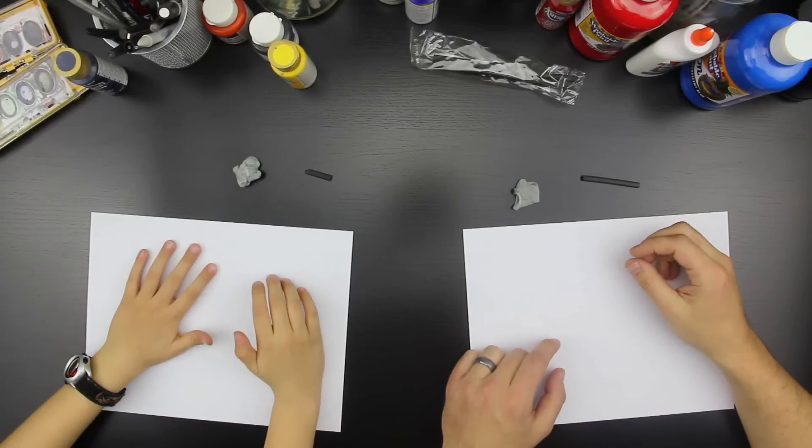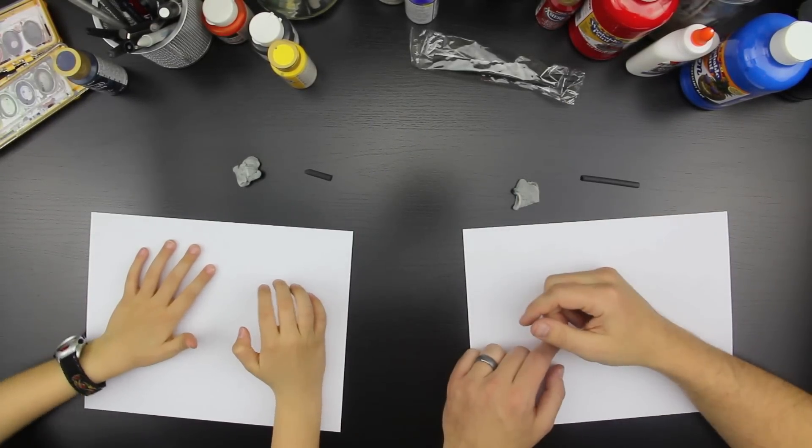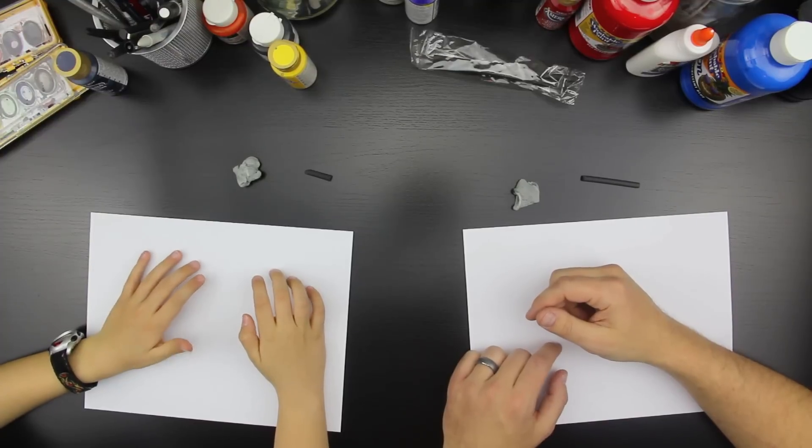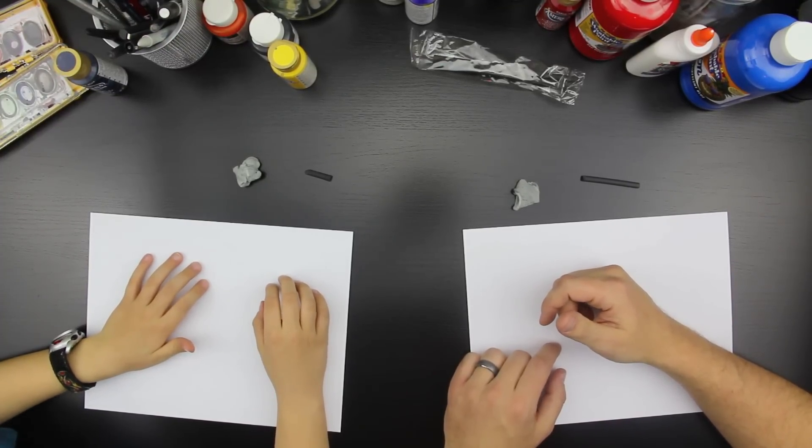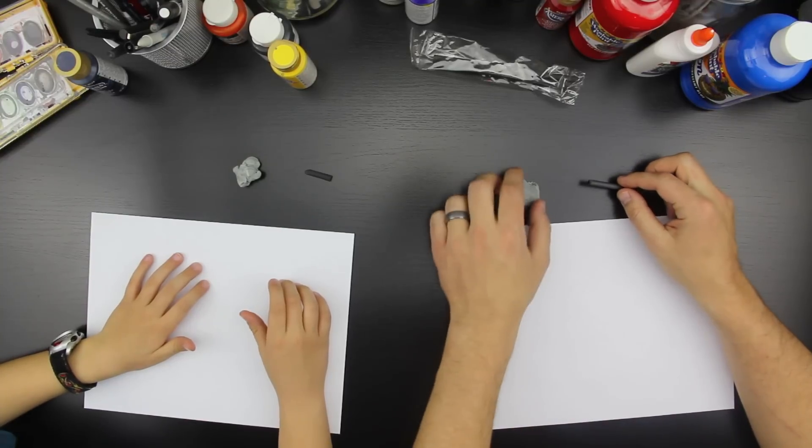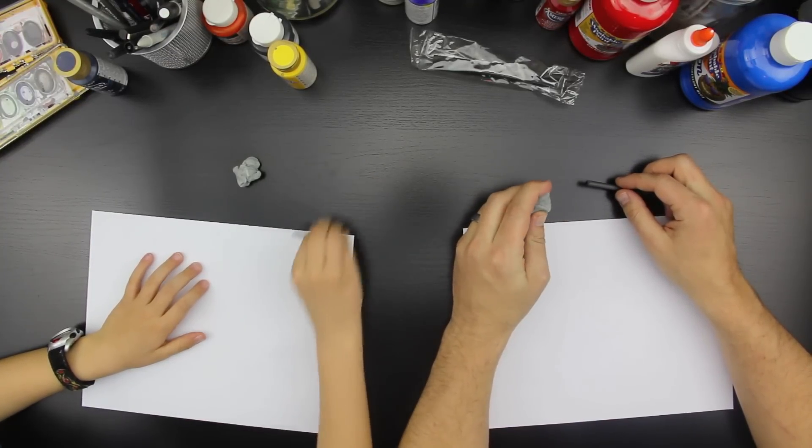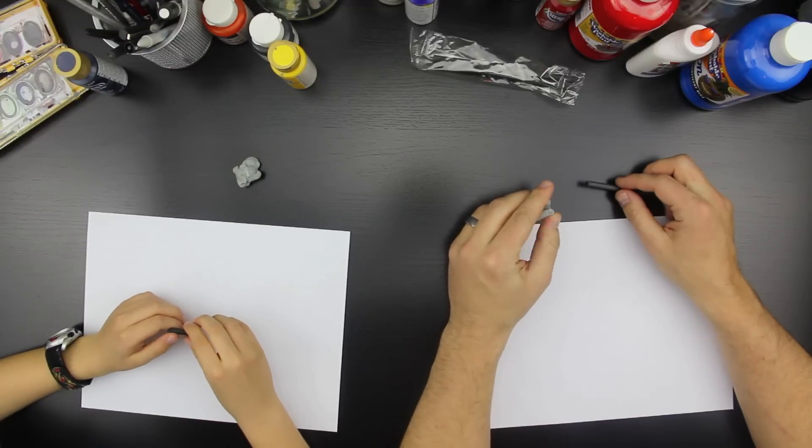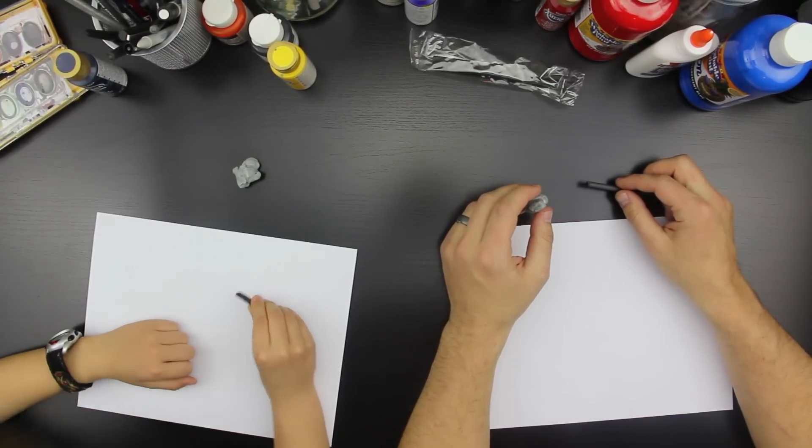Hey, this is Rob at art4kidshub.com and I got my awesome dude with me, Chuckers! What are we doing today? We're gonna shade a cube. This is a really hard thing to do, but I'm gonna show you how to do it in an easy way. Does that sound fun? Yes!